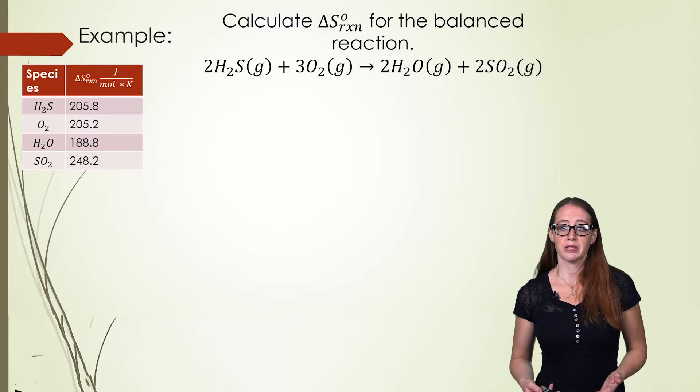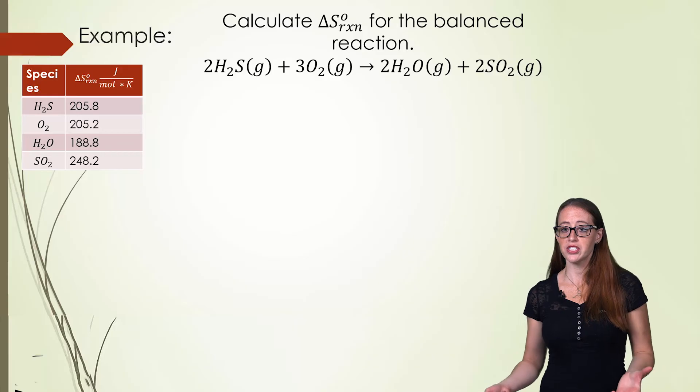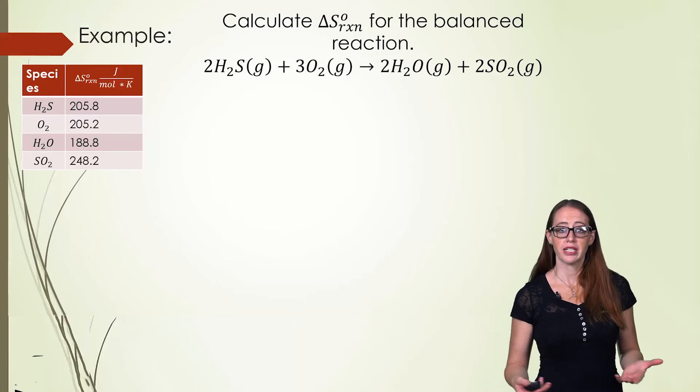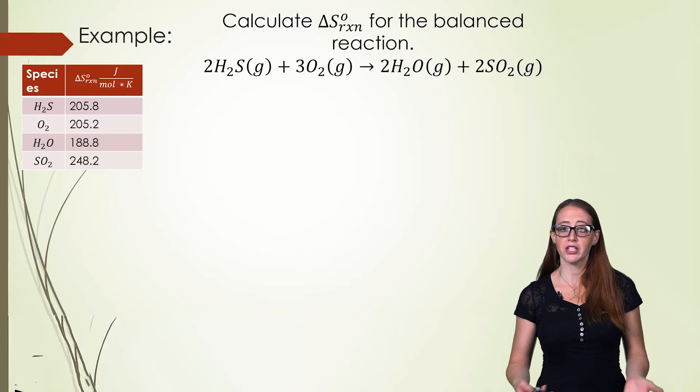Here we have a chemical reaction and a small excerpt from a data table. To calculate the change in entropy, we need to do products minus reactants. We need to remember to multiply the coefficients, since these are telling us how many of each product and reactant we have.